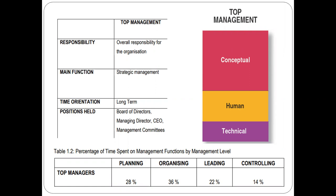Top managers also need human skills, for dealing with suppliers, partners, and middle-level managers, but they need fewer human skills than conceptual skills. Technical skills are least important for top managers — they don't need to be engineers or chartered accountants. They can hire technical specialists. Their most important skill is conceptual, or thinking, skills.